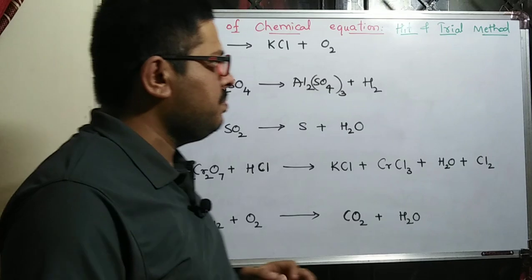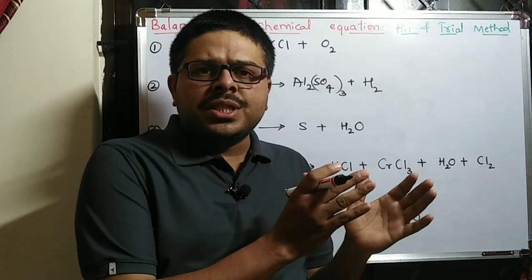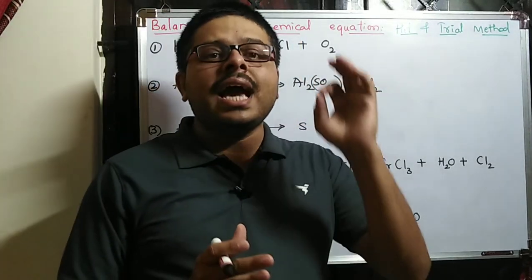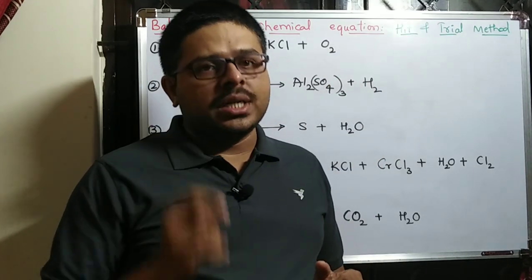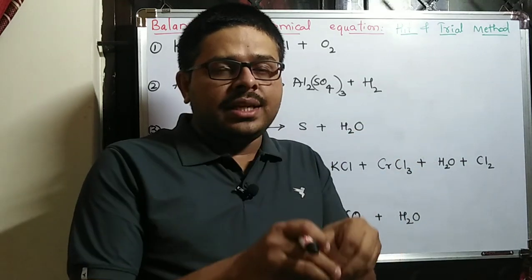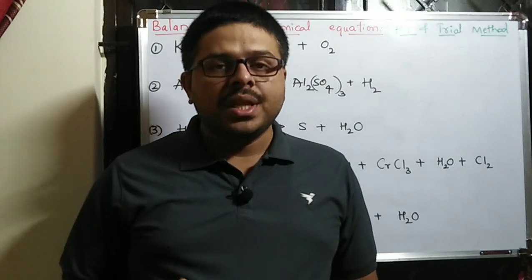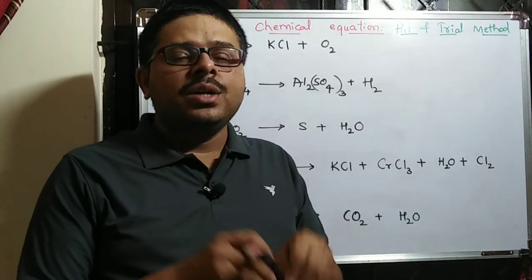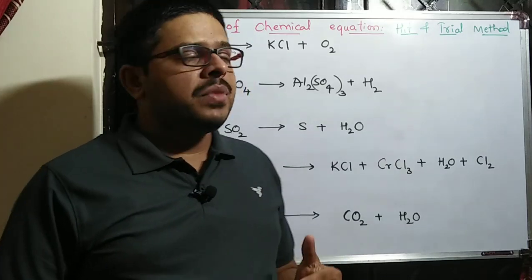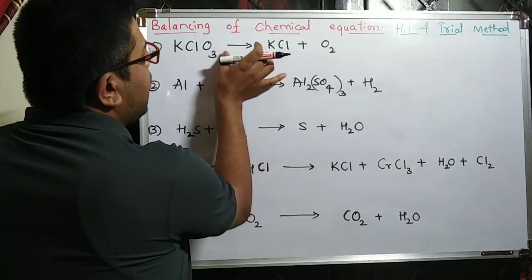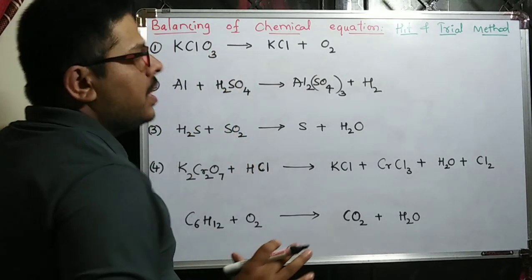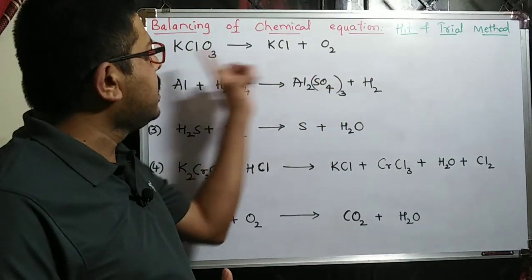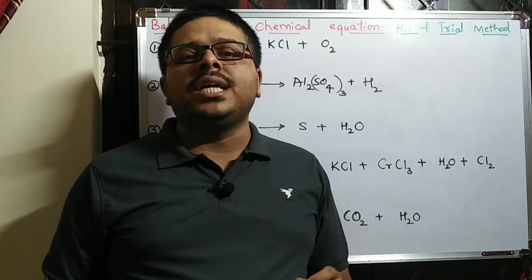First we will see what a chemical equation means. Generally, whenever one substance reacts with another substance to form a product, we write reactants on the left hand side and products on the right hand side. The substance which reacts is called a reactant, and the new compound formed is called the product. The reactants chemically combine to form a third compound called the product, and the LHS reactant and the product are differentiated by an arrow mark. This symbolic representation of the reaction is called a chemical equation.